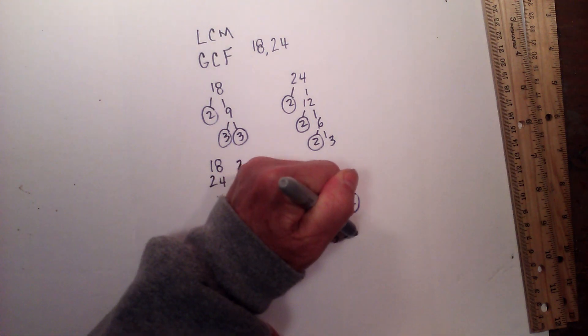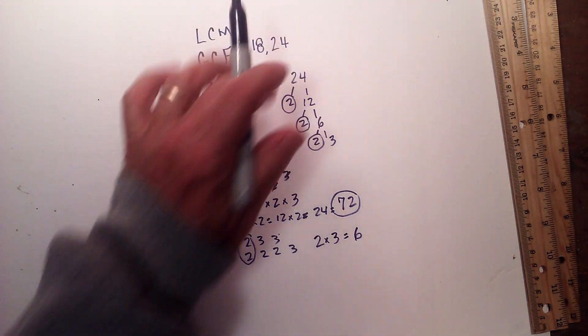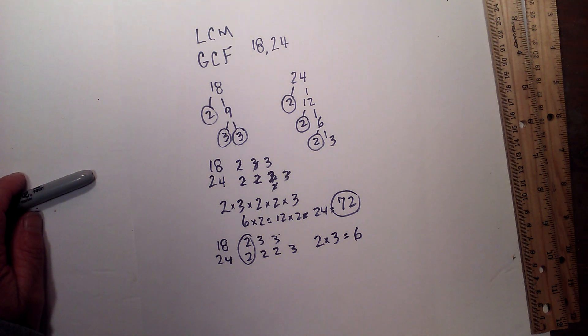Which equals 6, so the greatest common factor of 18 and 24 is 6. I hope that helps, thanks for watching. Moving Math uploads a new math and science video every day. Please subscribe and share.